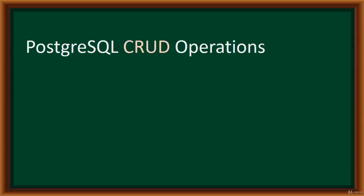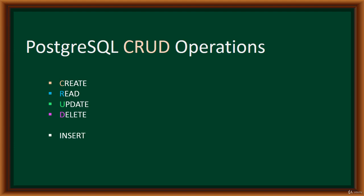Hello and welcome to the introduction to this section on Postgres CRUD operations. CRUD is an acronym for Create, Read, Update, and Delete. A lot of the time, the operations you will perform on a Postgres database will be to create, read, update, and delete. You also obviously need to add records, which you do with the INSERT command as well. We'll be performing these operations in this section. Thanks for watching.